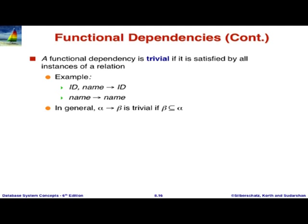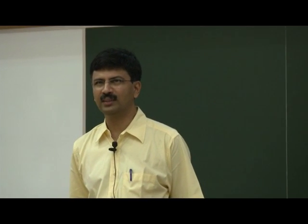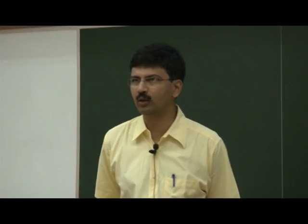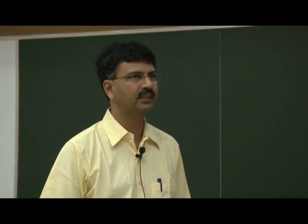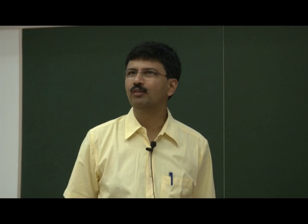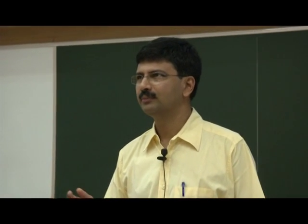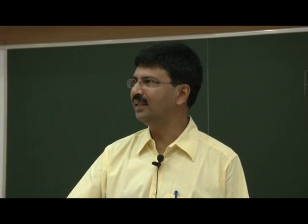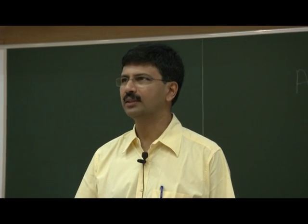A trivial functional dependency is one which will hold on all possible relation instances. A functional dependency is trivial if it is of this form: alpha determines beta, where beta is a subset of alpha. Obviously, when two tuples agree on alpha, they must agree on beta also. If you have N attributes, you can take any subset for the left and any subset of that for the right — so there are a lot of trivial functional dependencies.